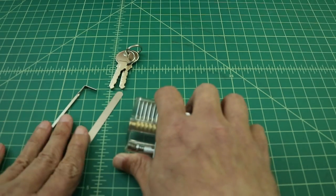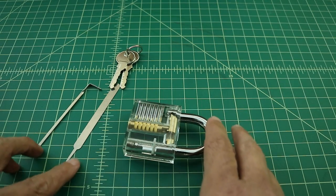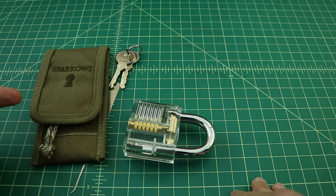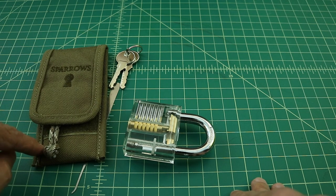Now for this exercise, we're going to use these Sparrow picks. This is a short hook and a simple tension wrench. They came out of my Sparrow's tuxedo kit. I'll link a video review of this kit below.